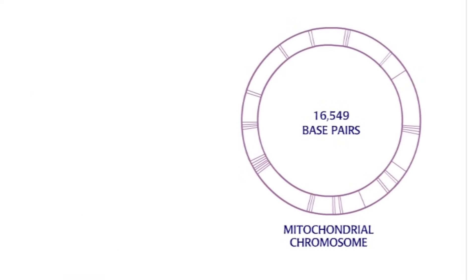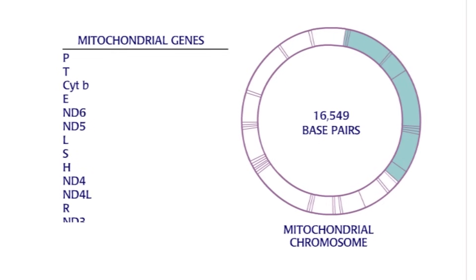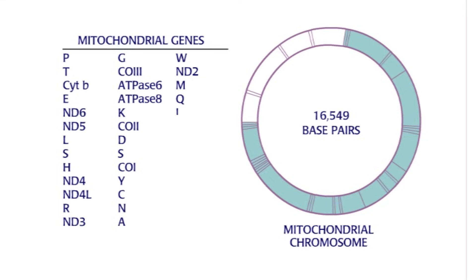Human mitochondrial DNA contains 37 genes. 13 genes are involved in the process of oxidative phosphorylation. 22 genes encode transfer RNAs for specific amino acids, whereas two genes encode two subunit RNAs of ribosomes.